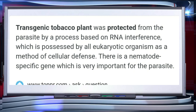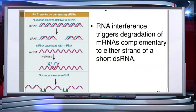There is a nematode specific gene which is very important for the parasite. Double stranded RNA binds and prevents translation of mRNA — that is, silencing. The source of this complementary RNA could be from an infection by viruses having RNA genomes, or mobile genetic elements that replicate via an RNA intermediate.